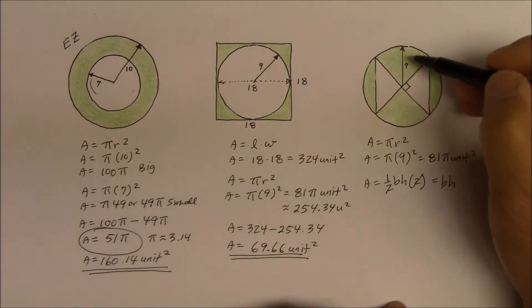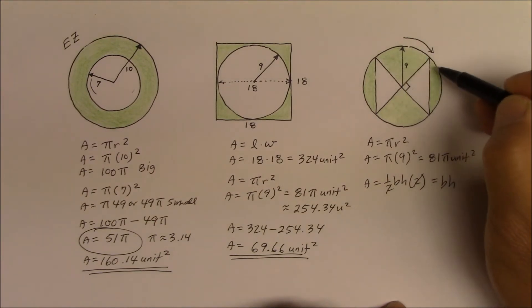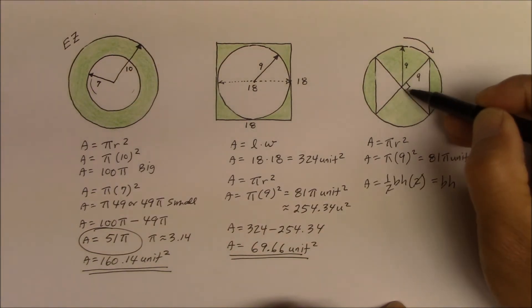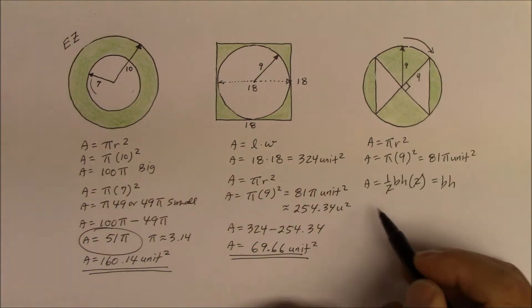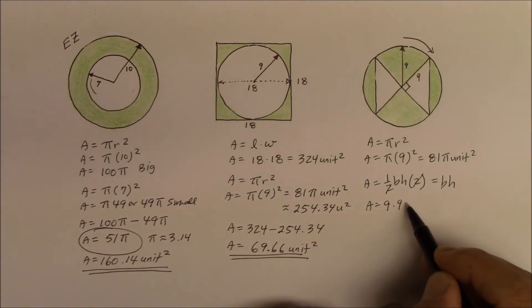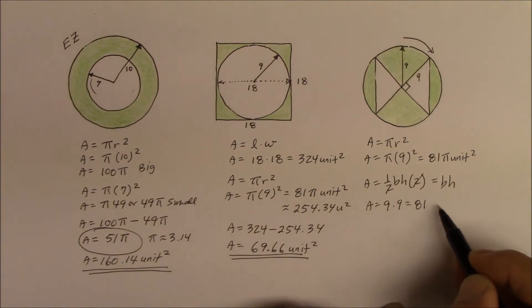Now where do we get that base and height? Well, that radius 9, as it rotates, since it's rotating inside a circle, the radius is the same. So this is also a 9. And if that's a 9, this is a 9 as well. So therefore, it's 9 times 9, which is 81 unit square.